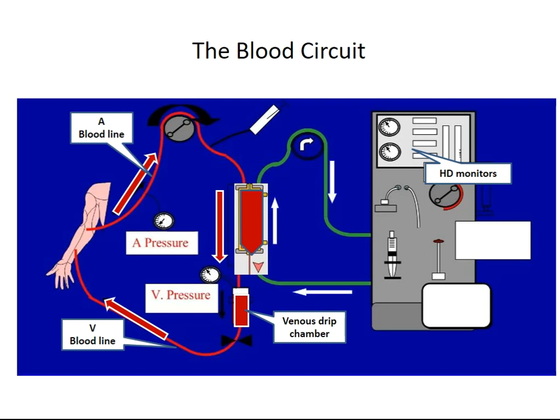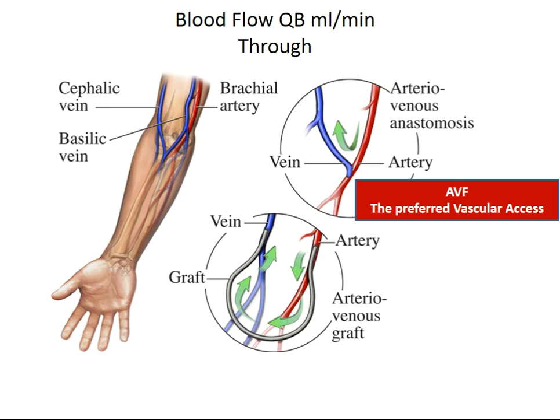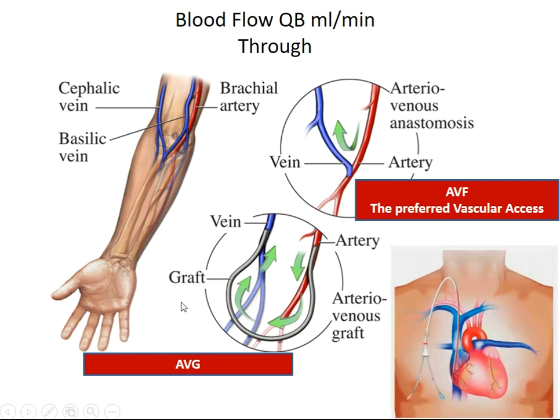Continuous monitors in the hemodialysis machine track the various extracorporeal circuit parameters. Blood flow goes through one of three vascular accesses: first and best is the arteriovenous fistula, which is the preferred vascular access; second is the arteriovenous graft; and lastly the central venous catheter, which is the last choice.